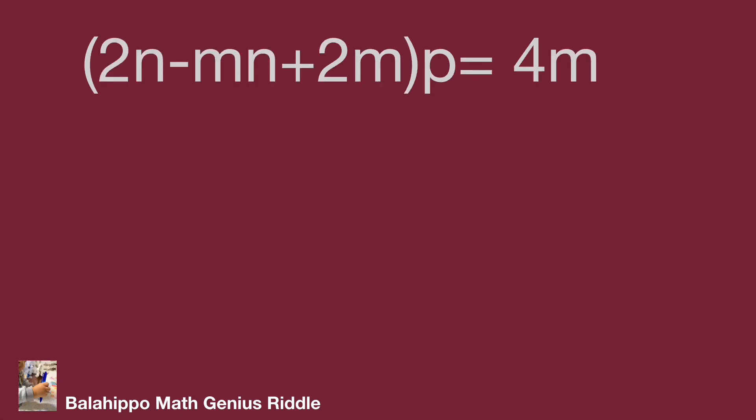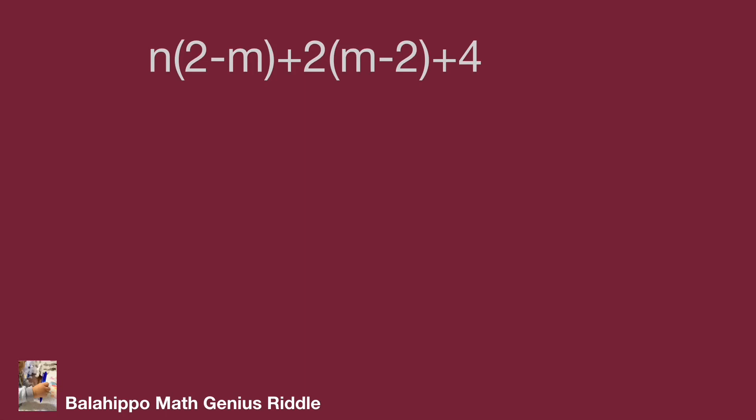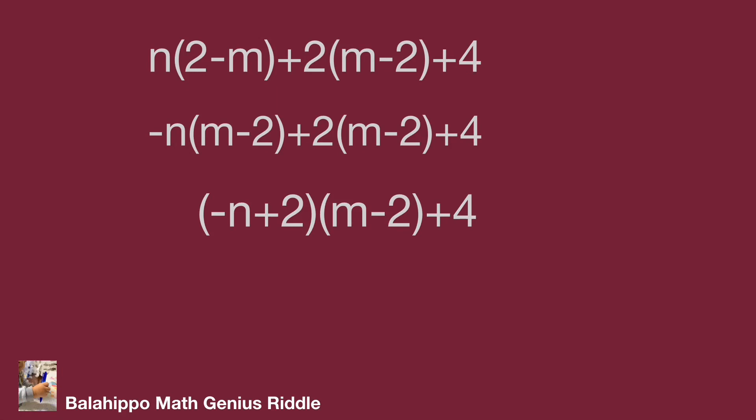Adjust the quantity 2n minus mn plus 2m to n time bracket 2 minus m bracket plus 2m. Then it becomes n time bracket 2 minus m bracket plus 2m minus 4 plus 4. Change it to quantity n minus 2 multiply quantity n times 2 minus m plus 4.